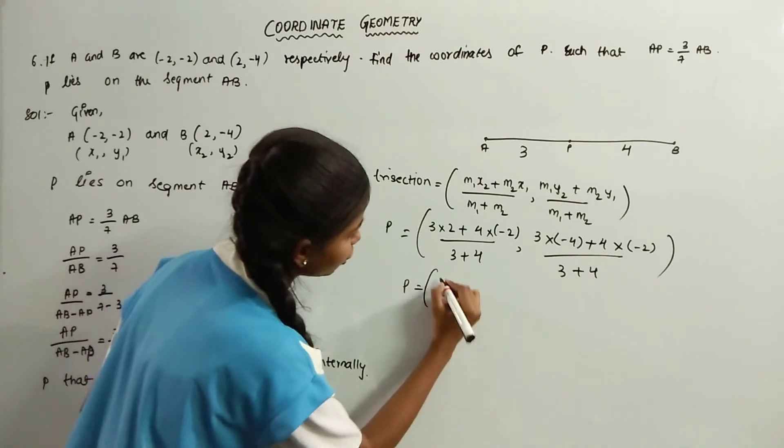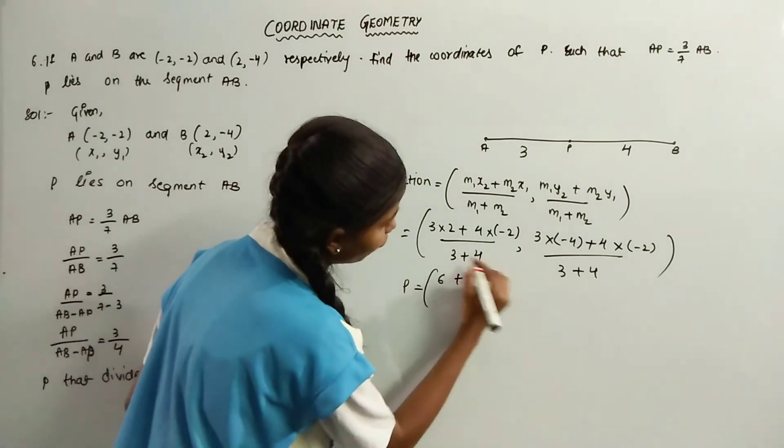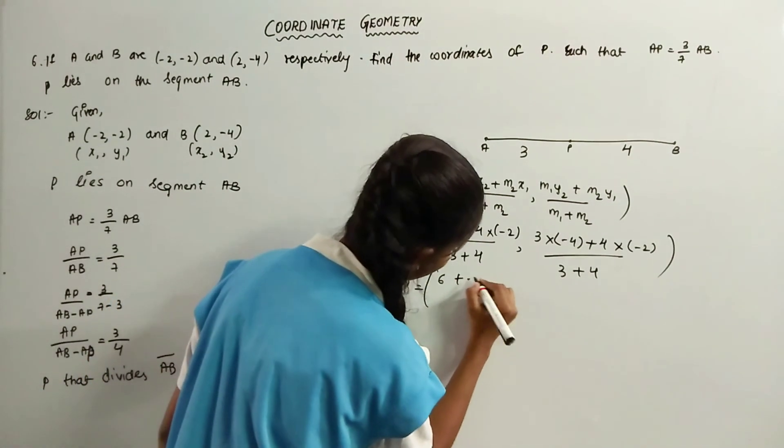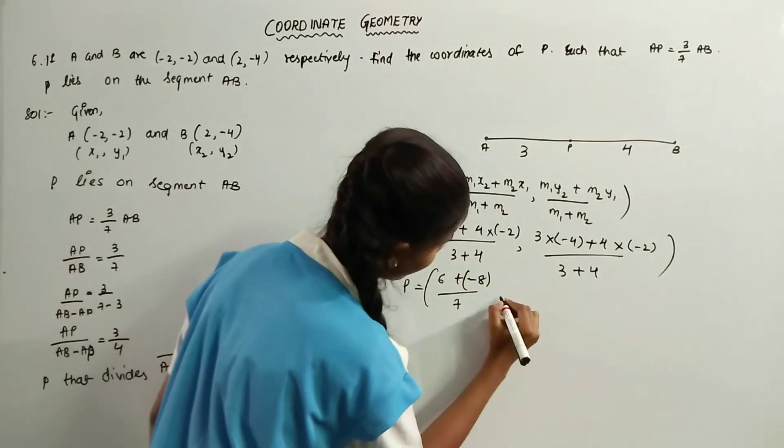P is equal to 3 into 2 is 6 plus 4 into minus 2 is minus 8, divided by 3 plus 4 is 7.